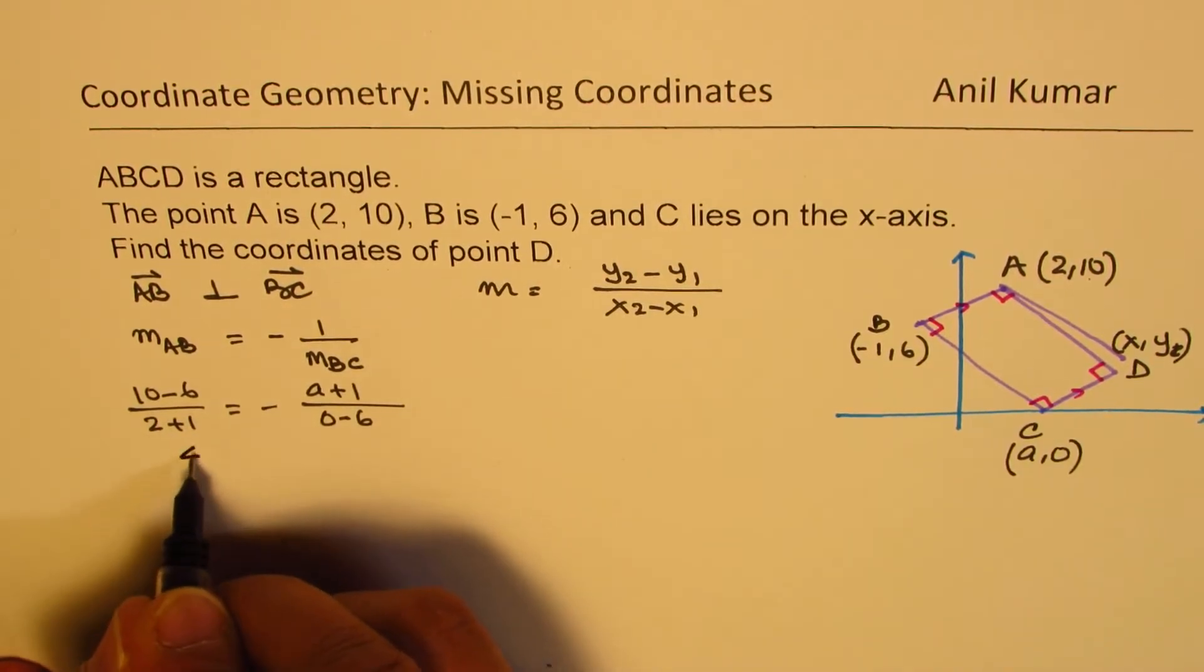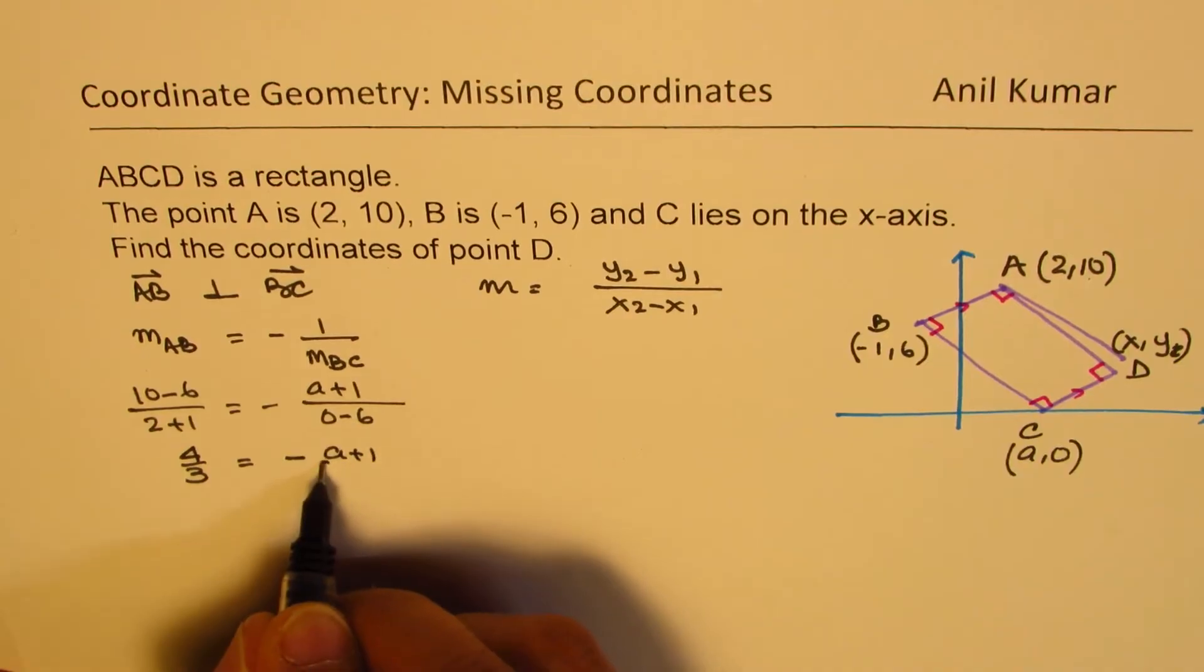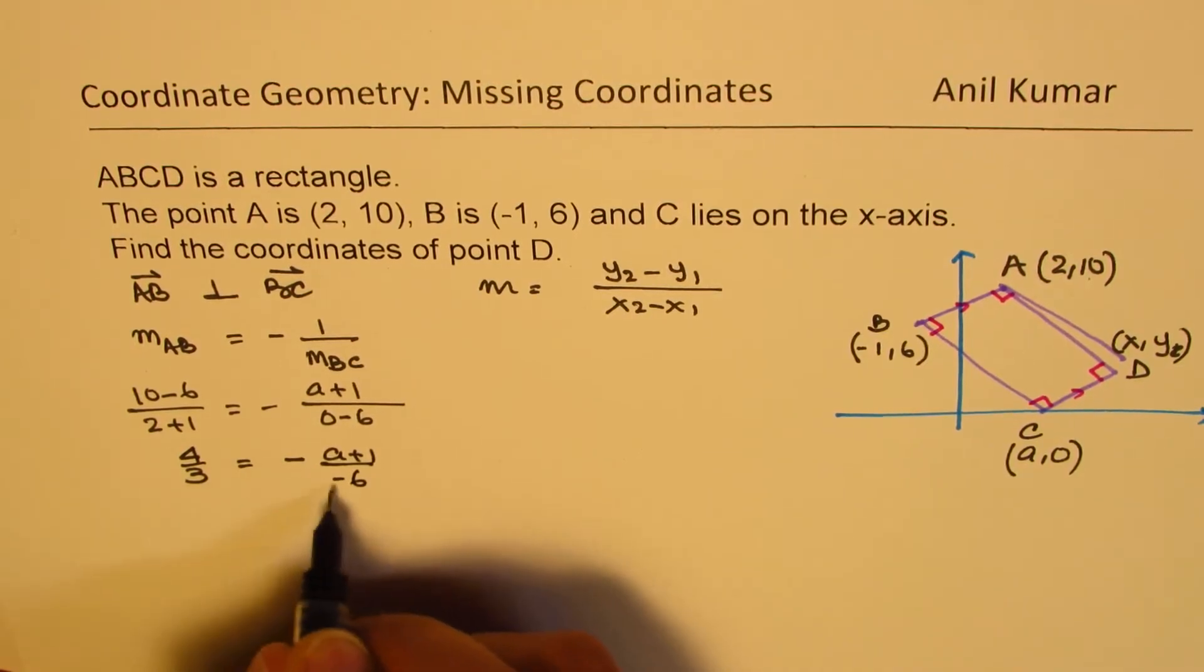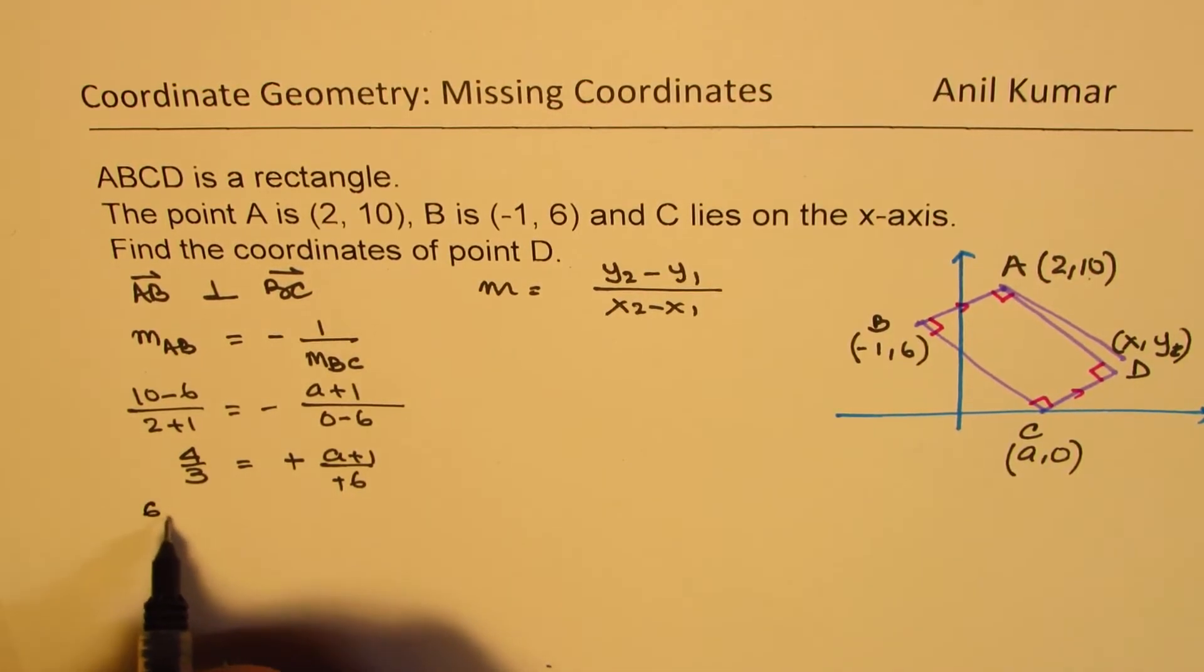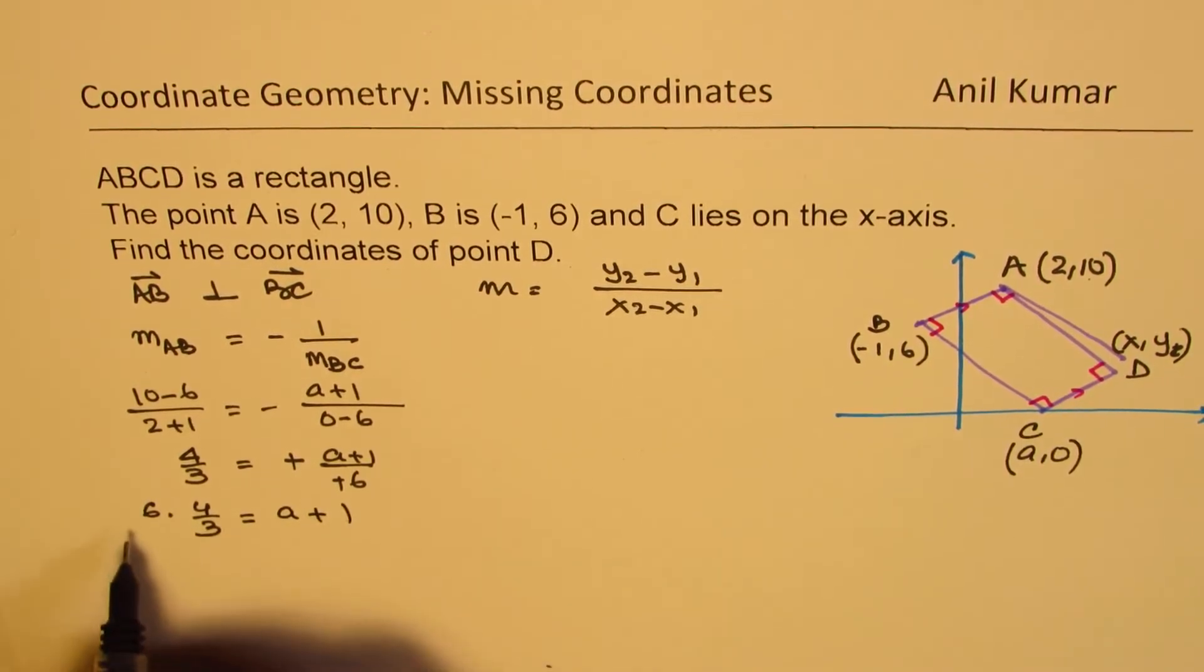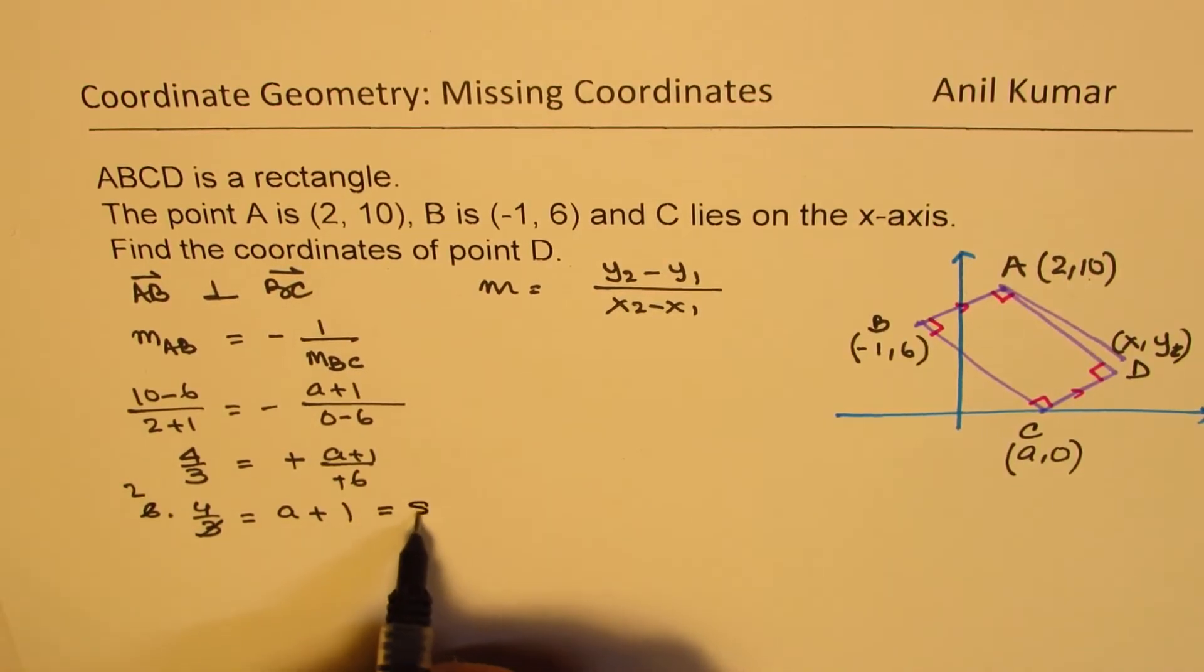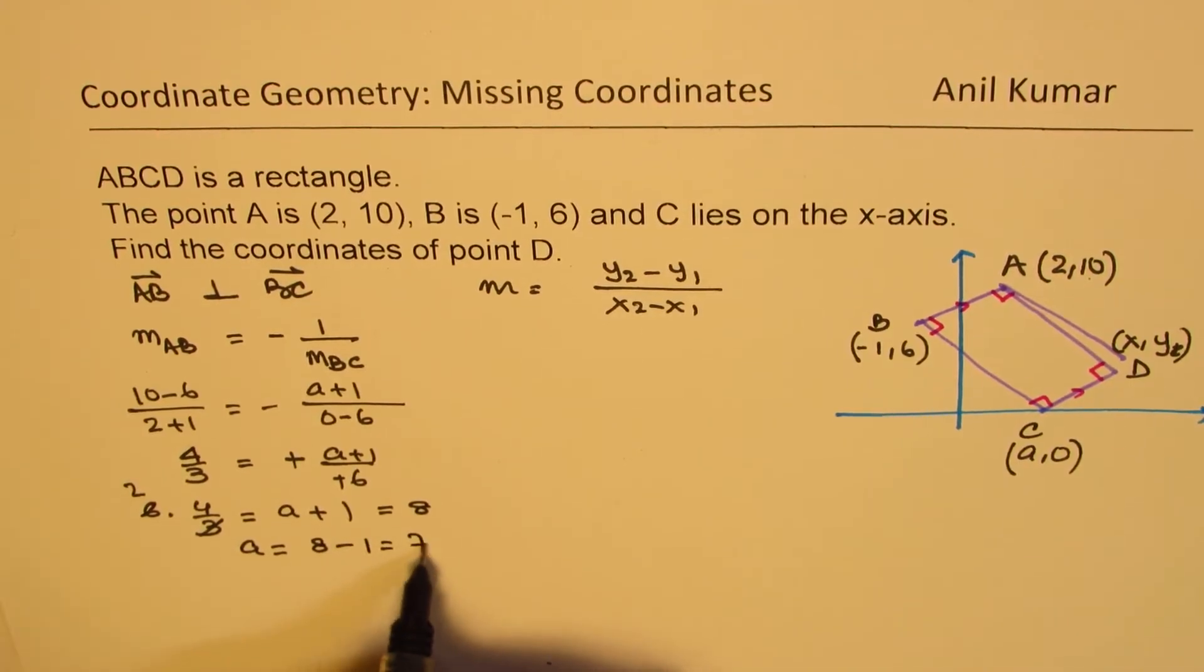And this ratio on the left side is 4 is to 3 equals to minus (A + 1) over minus 6. So that becomes positive. We can find the value of A, just cross multiply. 6 times 4 over 3 equals to A plus 1. And this is, that goes 2 times. So A plus 1 is 8. So we get A equals to 8 minus 1, which is 7.